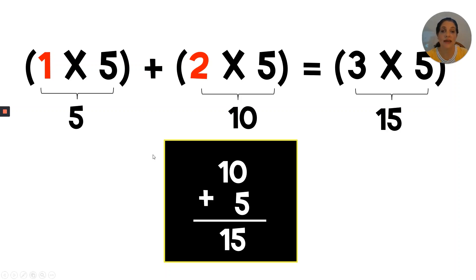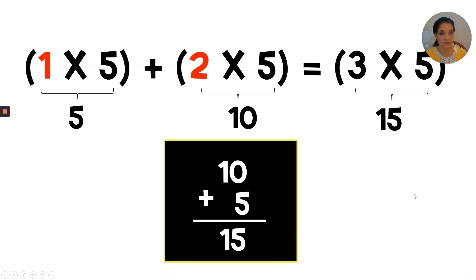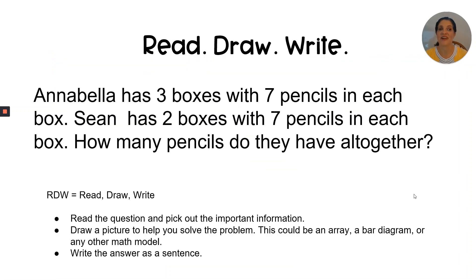Notice that the second number does not change — that's the amount in each row, so it's going to be five in all three expressions. The only thing that changed was the first factor, which is the number of rows. So one row plus two rows equals three rows. All right, let's put this to the test. We're going to do a read-draw-write question together, and then you'll do one on your own.